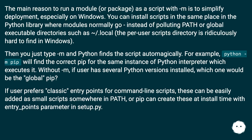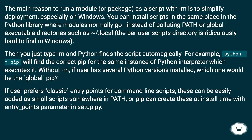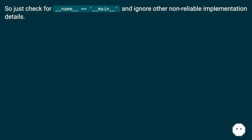For example, `python -m pip` will find the correct pip for the same instance of the Python interpreter that executes it. Without `-m`, if a user has several Python versions installed, which one would be the global pip? If the user prefers classic entry points for command-line scripts, these can be easily added — a small script somewhere in `PATH`, or pip can create these at install time with the `entry_points` parameter in `setup.py`. So just check for `if __name__ == '__main__'` and ignore other non-reliable implementation details.